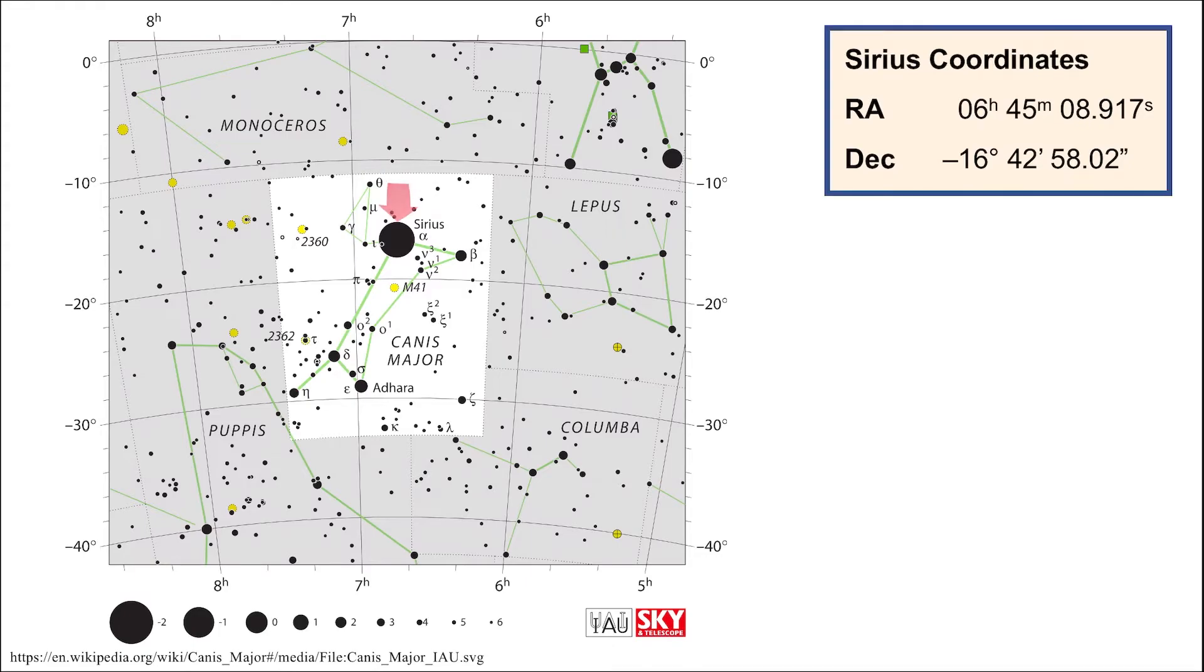Its right ascension and declination values are given at the top right of the screen, and a star map of the Canis Major constellation and the constellations surrounding it is given on the left. Using this star map, let's verify the coordinates of Sirius. But in order to do this, we need to first understand how to read this star map.